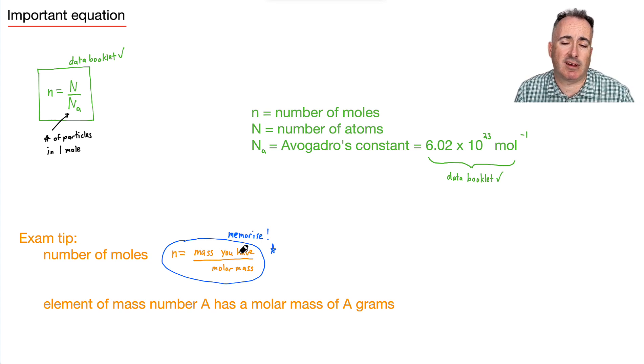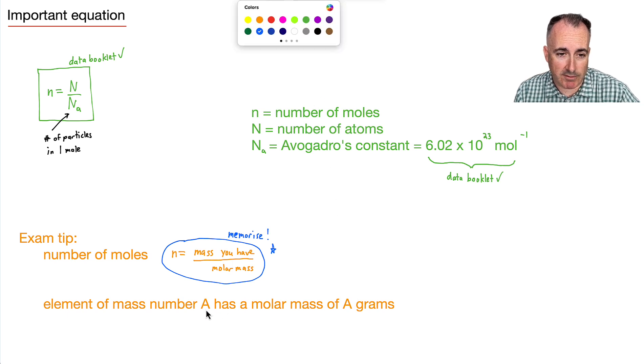So let's say they tell you, oh, you have seven grams of this material. Fine. Then the mass is seven grams. And what's this molar mass? Well, that's the mass of one mole of this material.